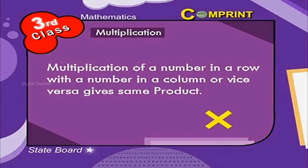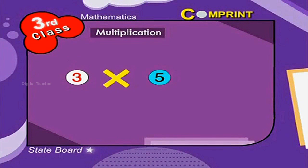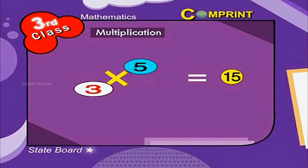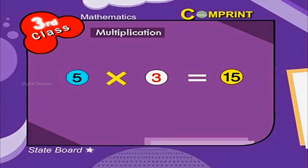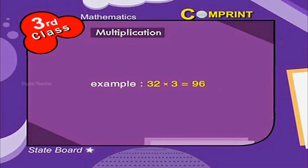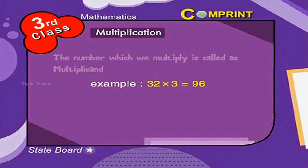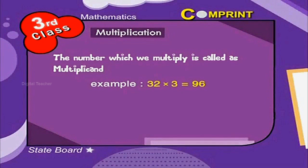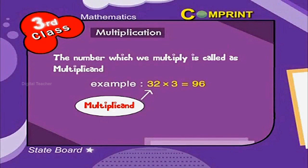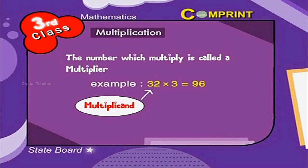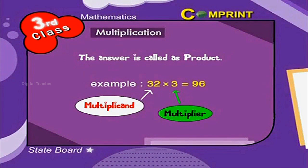Multiplication of a number in a row with a number in a column, or vice versa, gives the same product. For example, 3 into 5 is equal to 15, and 5 into 3 is equal to 15. 32 into 3 is equal to 96. The number which we multiply is called the multiplicand — here, 32 is the multiplicand. The number which multiplies is called the multiplier — 3 is the multiplier. The answer is called the product; therefore, 96 is its product.